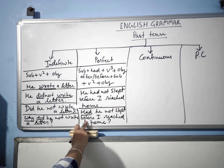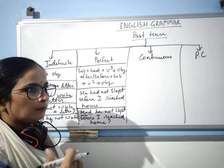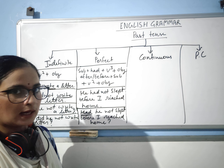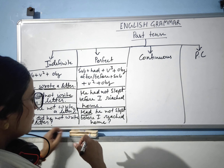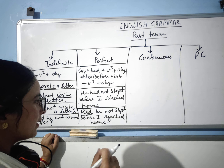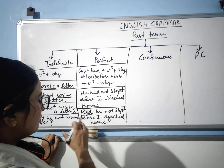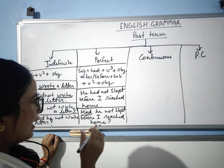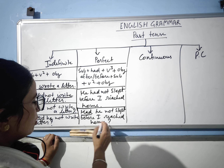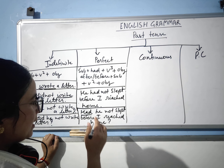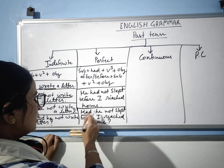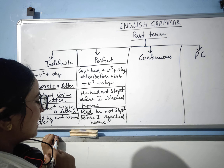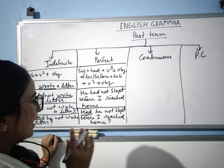In past perfect, you also use words like 'after', 'before', 'by', and 'when'. For example, 'by yesterday' — here we use different types of time words. For interrogative: 'Had he not slapped before I reached home?' The first sentence is in interrogative form with 'had' at the beginning.